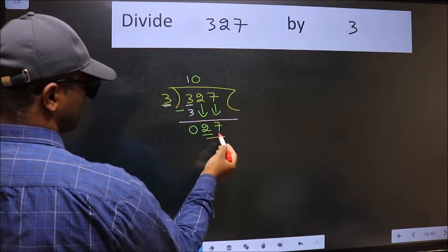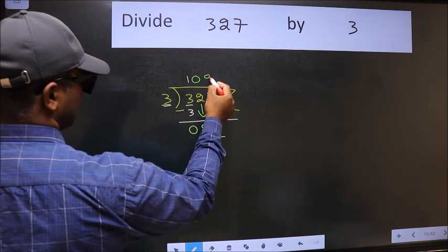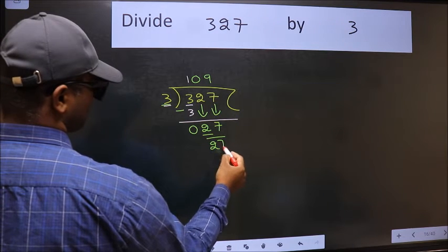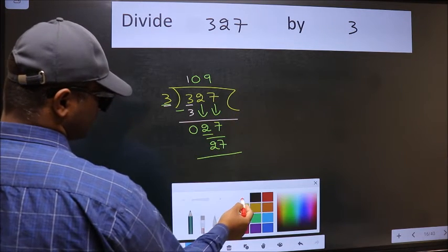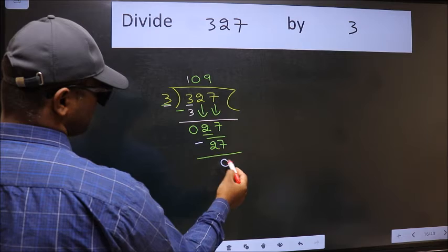Now 27. When do we get 27 in the 3 table? 3 nines is 27. Now we should subtract. We get 0.